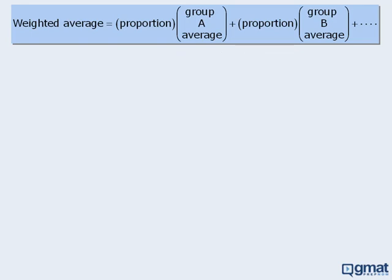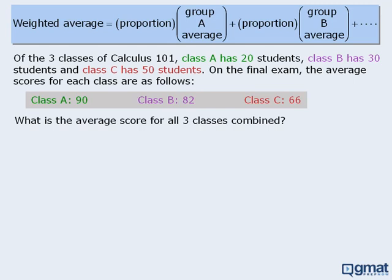Now let's apply this formula to the following question. Here we have three classes of Calculus 101. Class A has 20 students, Class B has 30 students, and Class C has 50 students. We are given the average test scores for each class, and we want to determine the average score for all three classes combined. Since there is a different number of students in each class, we can use the weighted average formula. First, let's determine the total number of students: adding all classes gives a total population of 100.